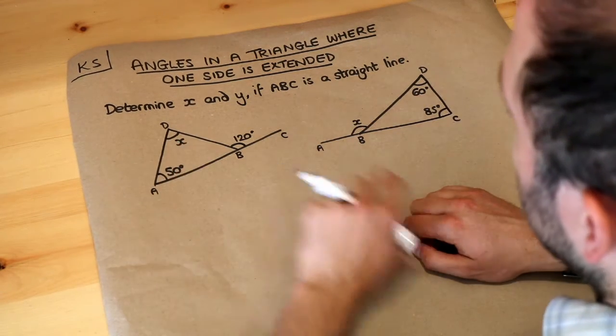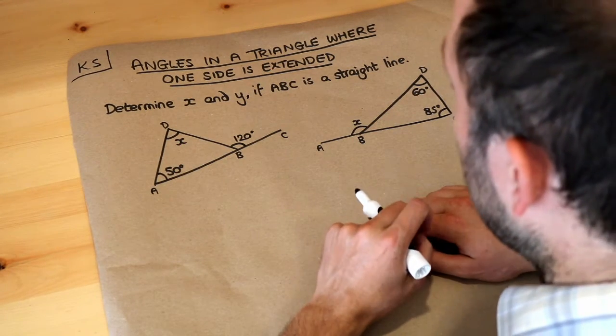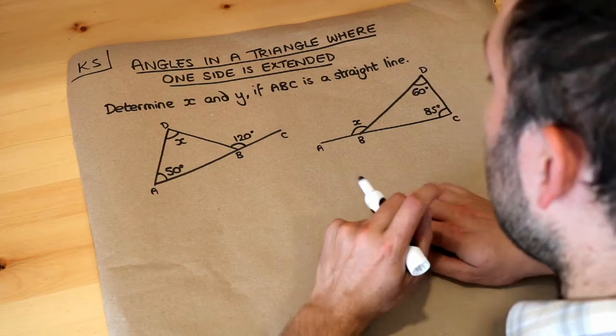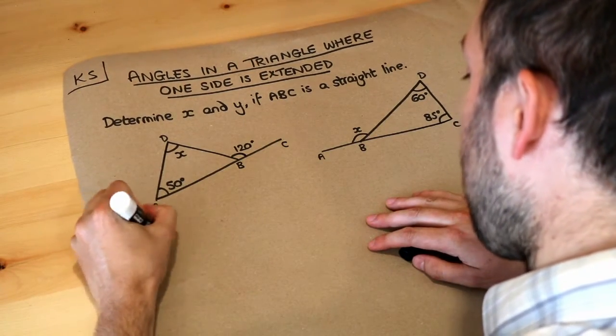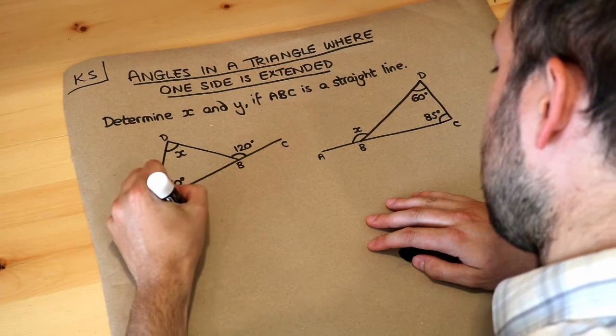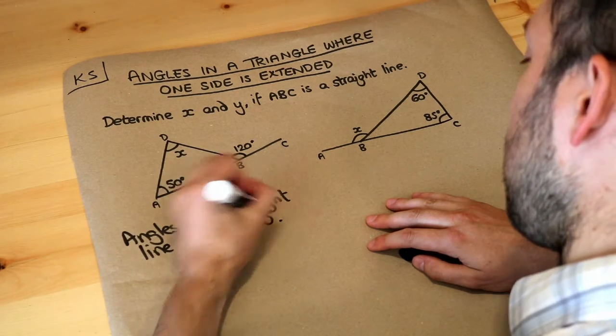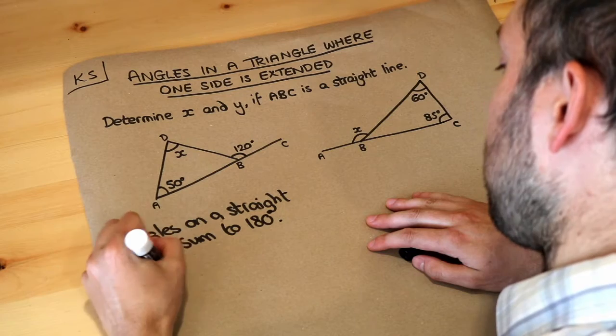If we want to find x in this diagram we just need to think about the angle laws we know. There's two angle laws that are relevant here. We know that angles on a straight line sum to 180 and we also know that the angles in a triangle sum to 180.